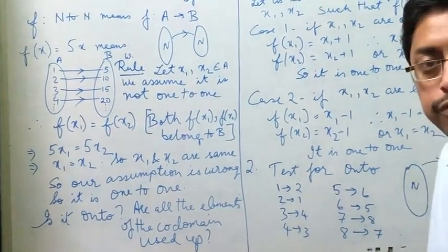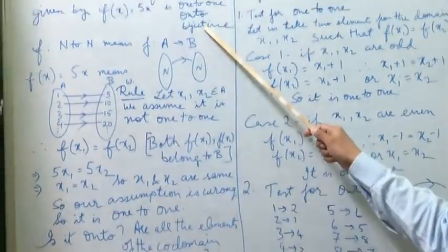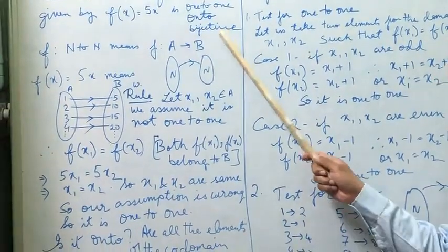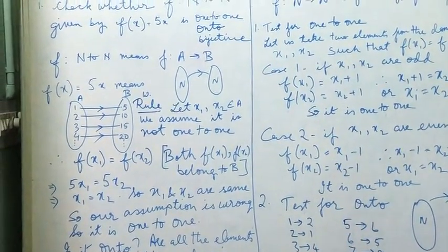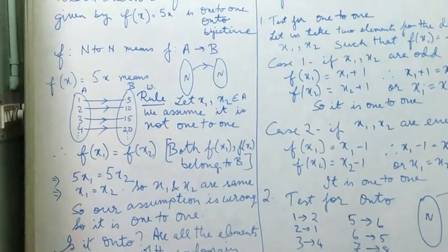And since it is not an onto function, it is not a bijective either, because for a bijective you would be requiring both these two to be valid. Let's take a look at another problem here.